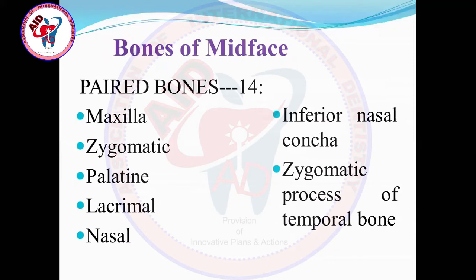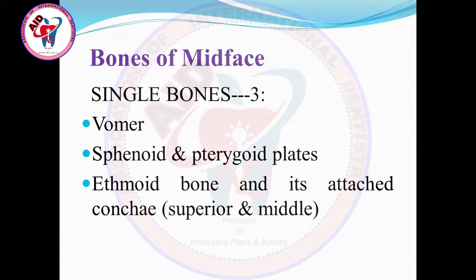There are a total of 17 bones which constitute the midface: 7 paired bones and 3 unpaired bones. The paired bones include: right and left maxillae, two zygomatic bones, right and left palatine bones, two lacrimal bones, two nasal bones, inferior nasal conchae, and the zygomatic process of the temporal bone. The unpaired bones include the vomer, the sphenoid bone with its pterygoid plates, and the ethmoid bone with its crista galli and middle concha.